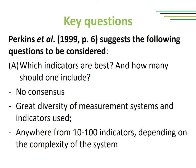In the literature, there are a couple of questions that need to be considered when building such measurement systems. A first question has to do with which indicators are the best and how many should we include. There is no consensus on this topic and there is a great diversity of measurement systems and indicators used. The systems I have examined have anywhere from 10 to 100 indicators, depending on the complexity of the proposed system.